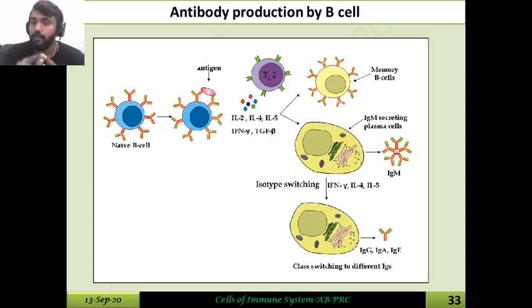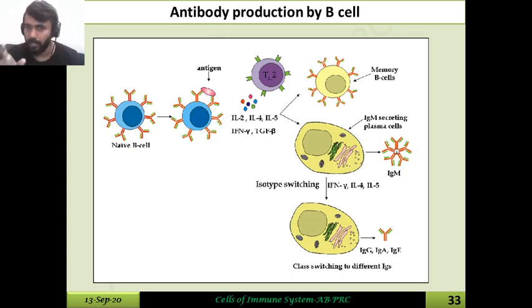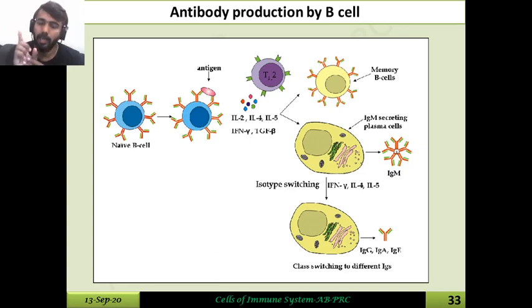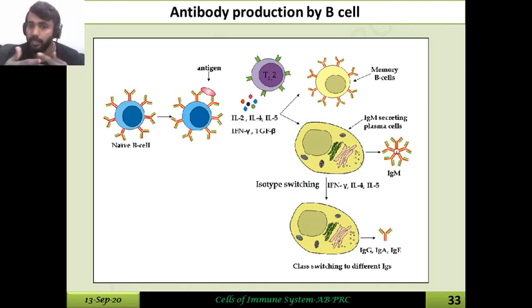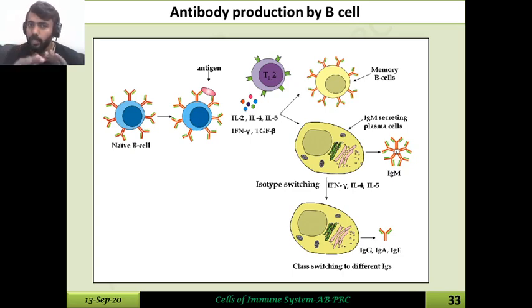In summary, B lymphocytes are lymphocytes with a specific receptor called the B cell receptor (BCR). They are named 'B' because B cell maturation in birds occurs in the Bursa of Fabricius. The B cell receptor is an immunoglobulin molecule belonging to the IgM or IgD category, and it is associated with two transmembrane proteins — Igα and Igβ — that assist in signal transduction. Antibody production occurs in secondary sites when naive B cells interact with an antigen, differentiating into memory cells and plasma cells that produce antibodies.